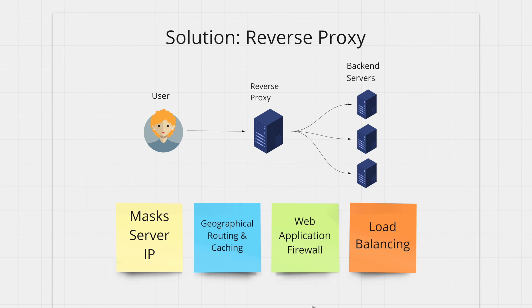When it comes to geographical routing, your reverse proxy can look at the IP address of the request, figure out which location it's coming from, and route the request to the nearest backend server — enabling geolocation-based routing and caching. As you can see, all the problems we talked about can be solved by having a reverse proxy, which is why it can be such an important part of any system you design.